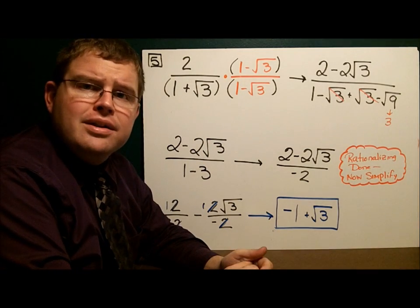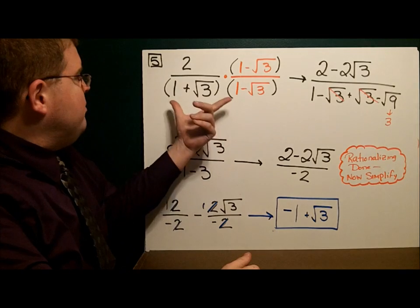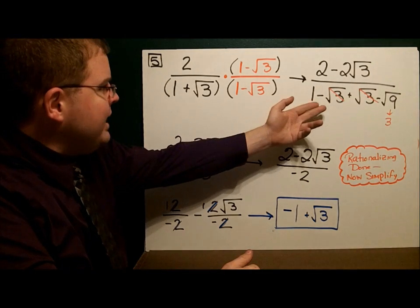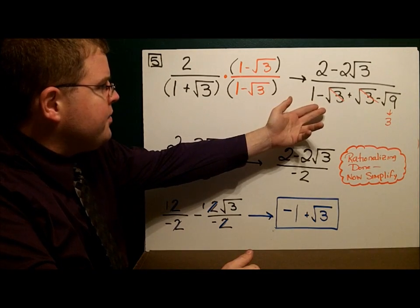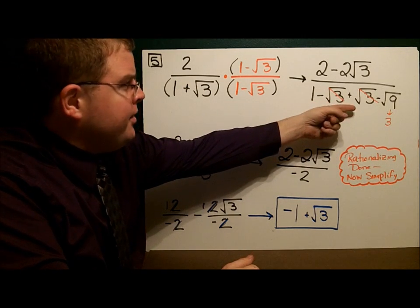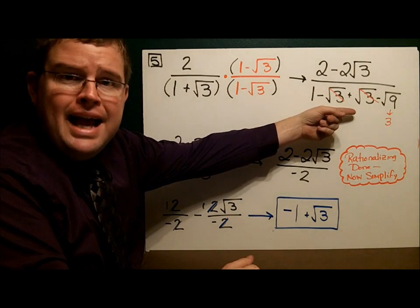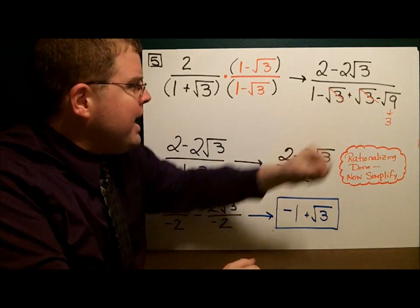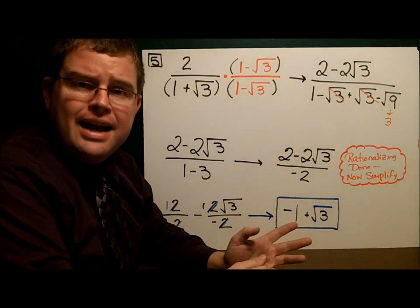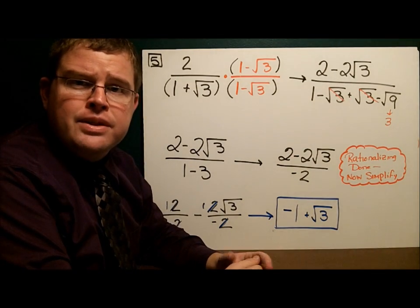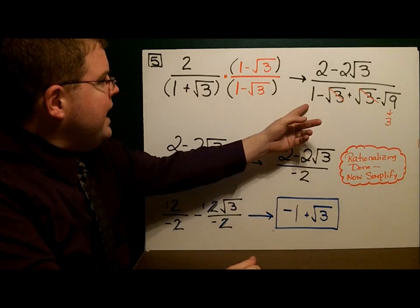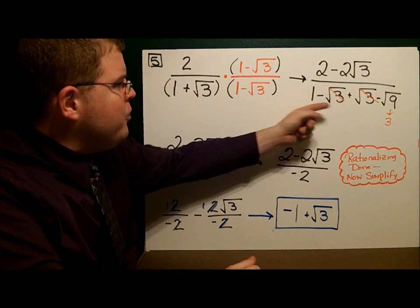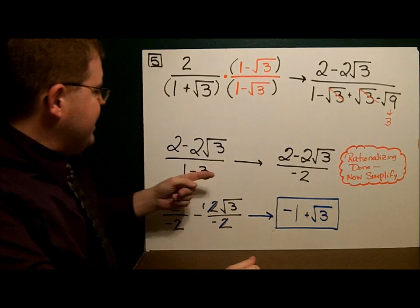Now I'm going to multiply these. In the numerator, I distribute: 2 times 1 is 2, and 2 times negative square root of 3 is minus 2 square roots of 3. In the denominator, I get 1 minus the square root of 3 plus the square root of 3 — I expected the middle to fall out — minus the square root of 9. And 9 is a perfect square. These opposite terms cancel out, leaving 1 minus 3, which is negative 2.